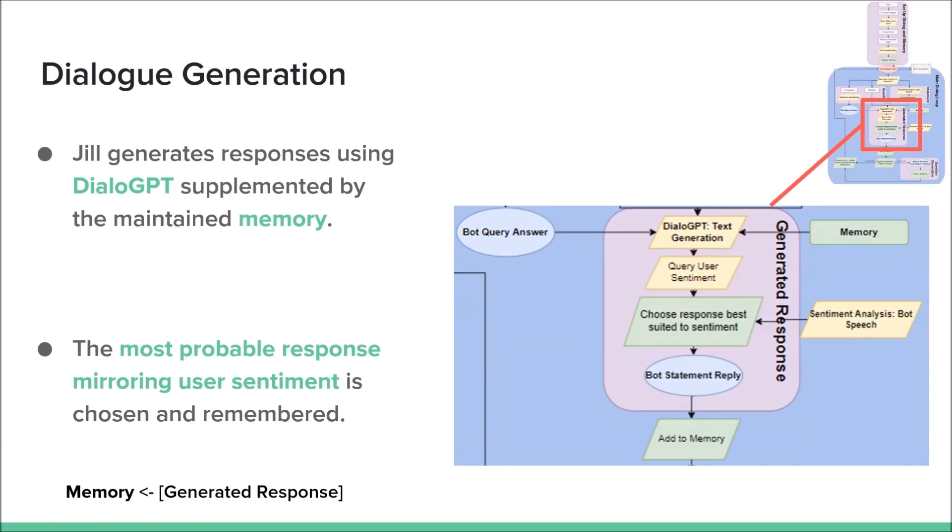And the dialogue generation using DialoGPT creates a pool of five responses and chooses the most probable response mirroring the user's sentiment.